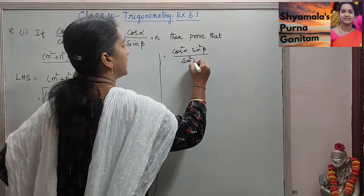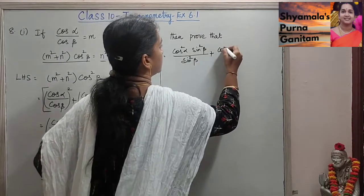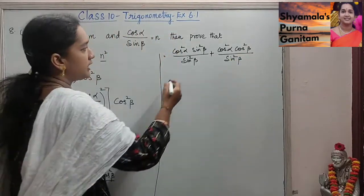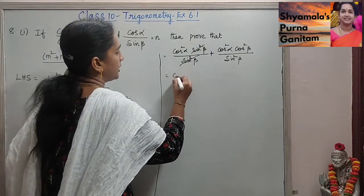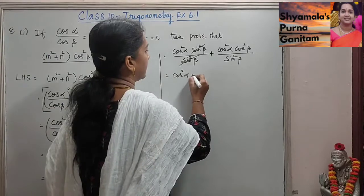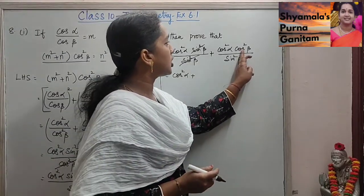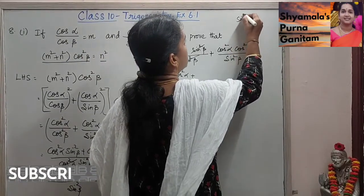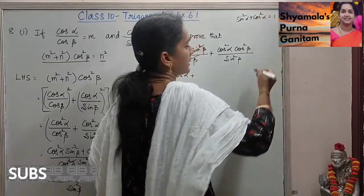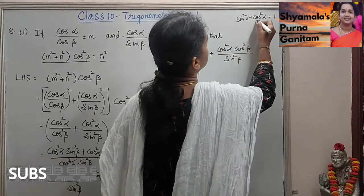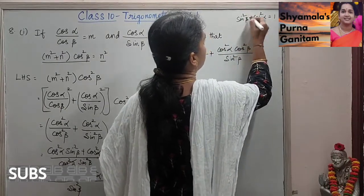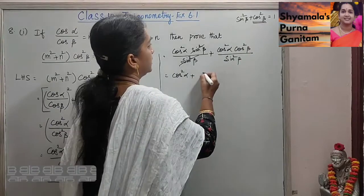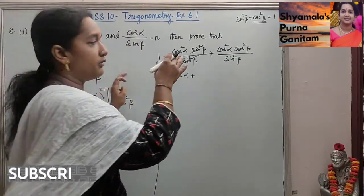Since sin squared β is common to both terms, we get cos squared α plus cos squared α cos squared β divided by sin squared β. The sin squared beta cancels in the first term. Now instead of cos squared β we can write 1 minus sin squared β, using the identity sin squared β plus cos squared β equals 1. So we need RHS as n squared, which is why we rewrite cos squared β as 1 minus sin squared β.